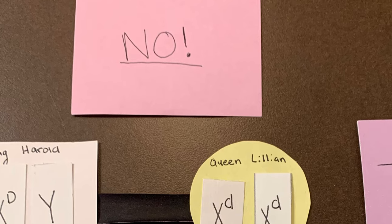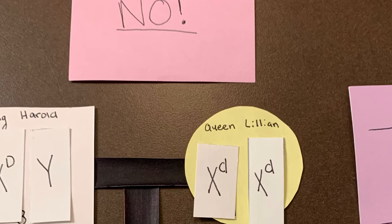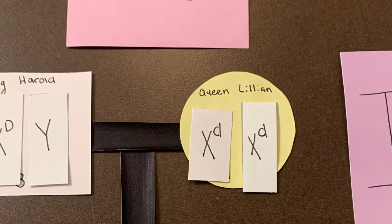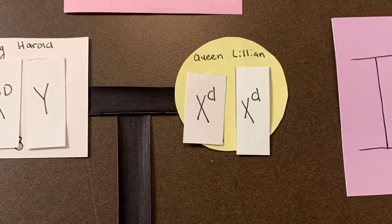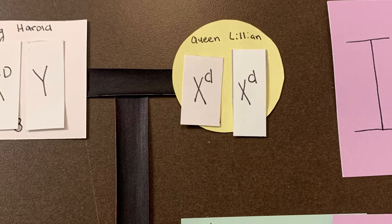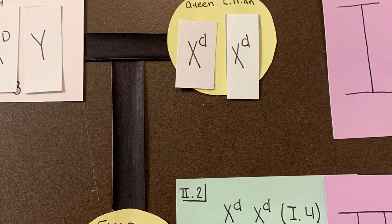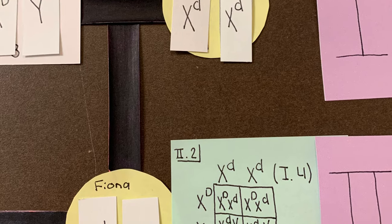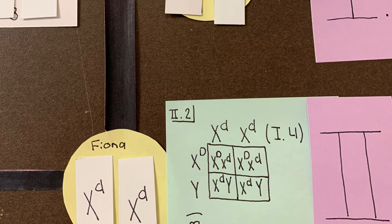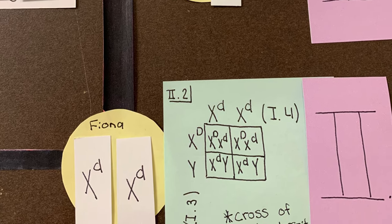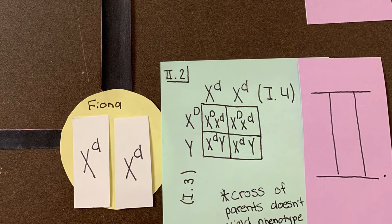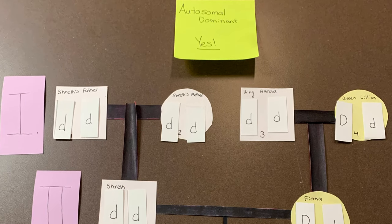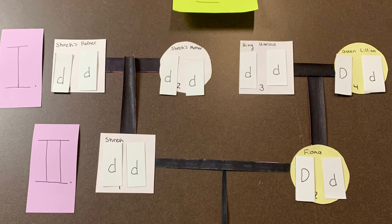Next we'll discuss whether or not this pedigree is indicative of an X-linked recessive mode of inheritance. I'm only focusing on the genotypes of individuals 13 and 14 because they are incompatible with the actualized phenotype of individual 22. Because of this, the pedigree is not consistent with an X-linked recessive mode of inheritance.